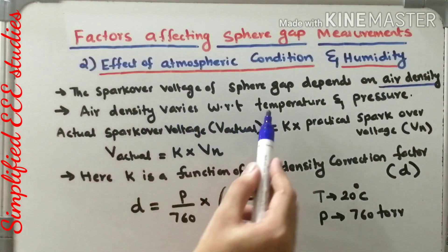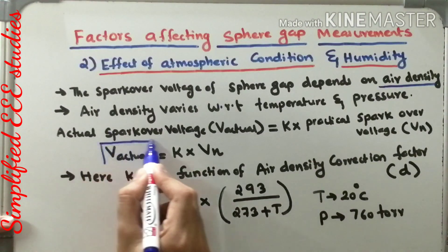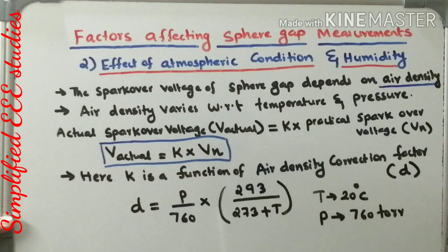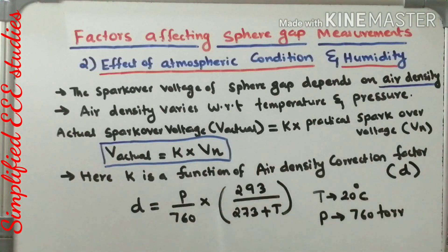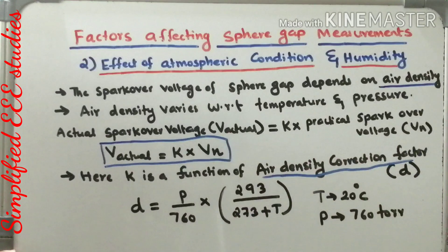The air density varies with respect to temperature and pressure. We can calculate the actual value of spark over voltage using the equation: V_actual = K × V_N, where V_actual is the actual value of spark over voltage and V_N is the practical value obtained by conducting the experiment. K is not a constant — it is a factor, a function of the air density correction factor.